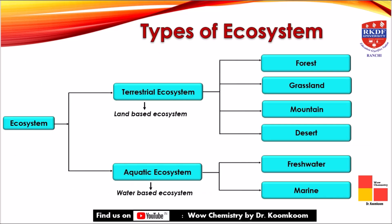Next are the types of ecosystem, broadly classified as the terrestrial ecosystem meaning land-based ecosystem, and the aquatic ecosystem meaning water-based ecosystem. The terrestrial ecosystem is further classified as forest ecosystem, grassland ecosystem, mountain ecosystem, and desert ecosystem. The aquatic ecosystem is classified as freshwater ecosystem and marine ecosystem.